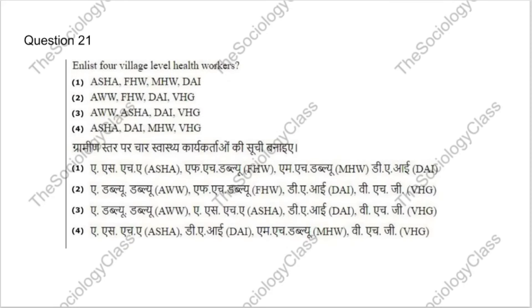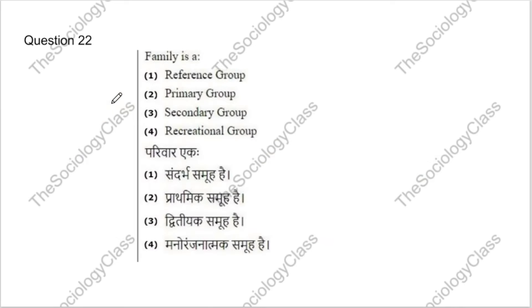Question 21: Enlist four village level health workers. Options include ASHA, FHW, MHW, DAI, AWW, VHG combinations. After the video, search for all the full forms of these abbreviations. The correct answer is option 3 — AWW, ASHA, DAI, VHG.